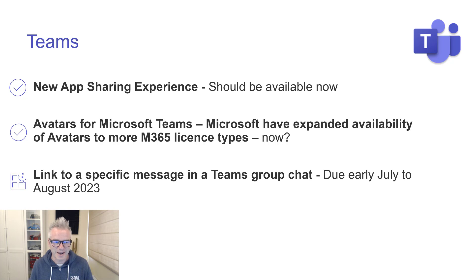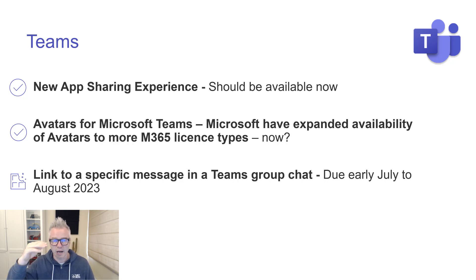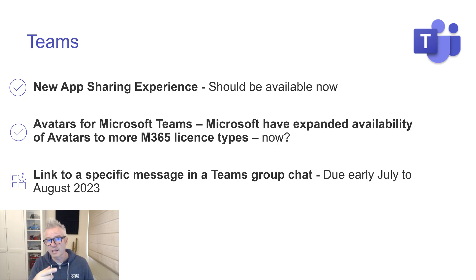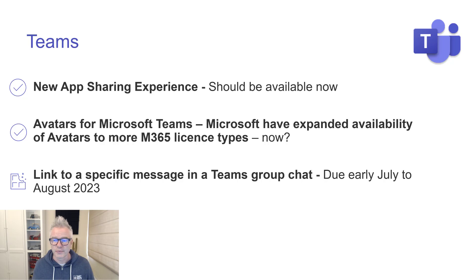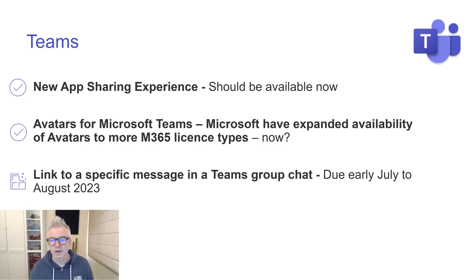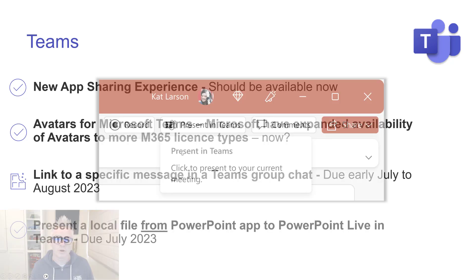Link to a specific message in Teams group chat. Think about a chat in a channel — you can click the ellipsis and create a link to a specific message. You don't currently have that in group chat, so when you're trying to refer to something it's more difficult. This gives you the ability to link to a specific message in group chats. Should be here sometime in July or August — a small change but quite good.